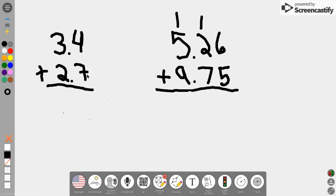Let's begin with 3.4 plus 2.7. Let's add 4 plus 7, that's 11. Carry the 1. We got 3 plus 1 is 4, plus 2 is 6.